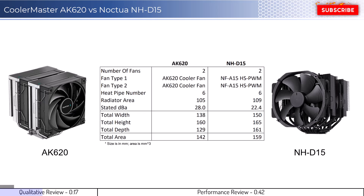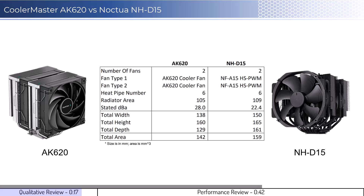With that in mind, let's look at some key qualitative metrics. Both CPU cooler images show the side of the cooler that would face the RAM. Both coolers will overhang the RAM slots in most setups. Additionally, both coolers each use two fans, with the AK620 using two 120mm fans and the Noctua NH-D15 using two 150mm fans.